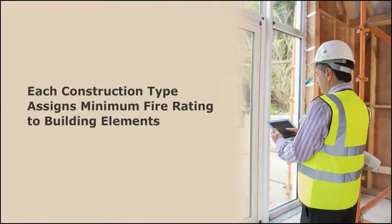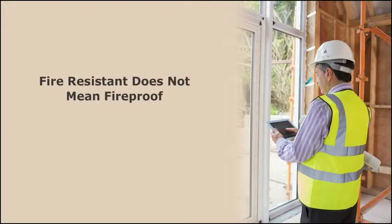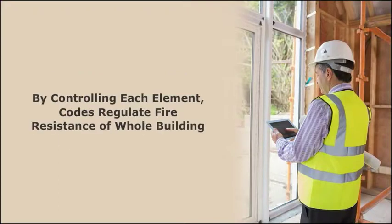Each construction type also assigns a minimum fire rating to building elements. These ratings are based on the number of hours the building element must be fire resistant, meaning that it will not be adversely affected by flame, heat, or hot gases. Note, though, that fire resistance does not mean fireproof. Instead, it is an hourly fire endurance rating. By controlling each element, the codes are able to regulate the fire resistance of a whole building.